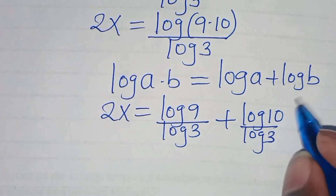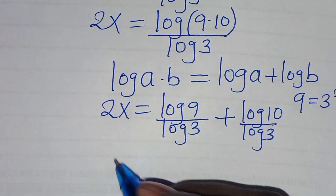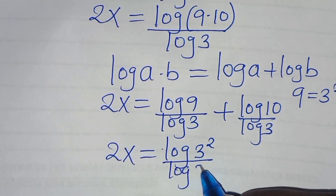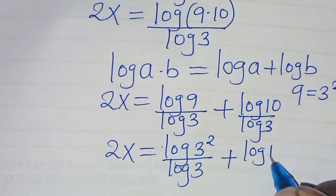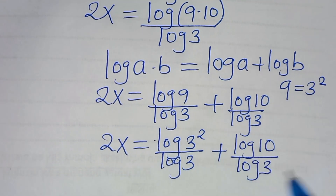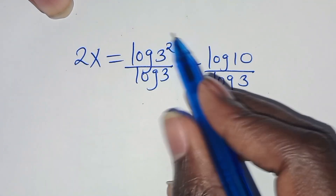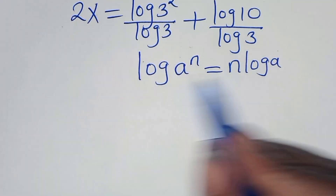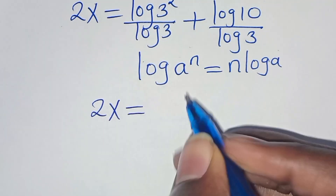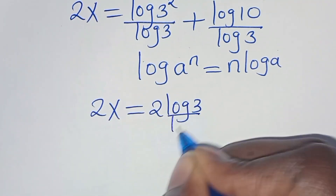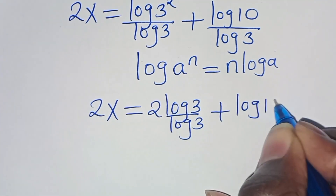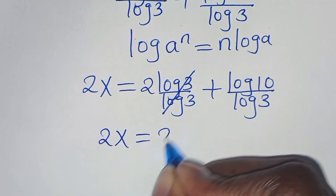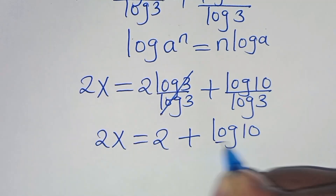The next step is that we can express 9 as 3 to the power of 2. So this implies here we have 2x equal to log(3 to the power of 2) divided by log 3, then plus log 10 divided by log 3. Now log(3 squared) is in the form of log a to the power of n, which we can express as n log a. Applying this property, we have 2x equal to 2 log 3 divided by log 3, plus log 10 divided by log 3, which simplifies to 2x equal to 2 plus log 10 divided by log 3.